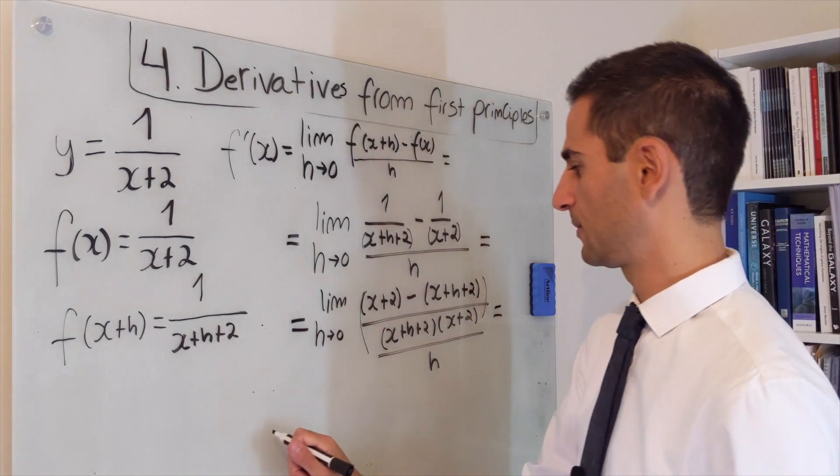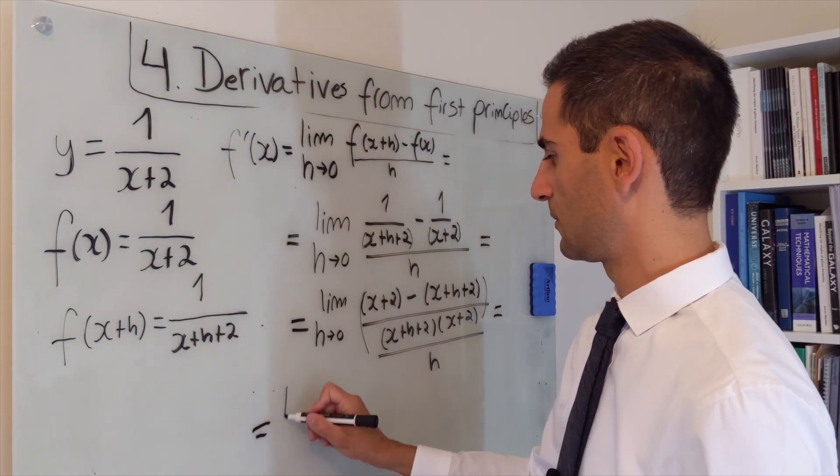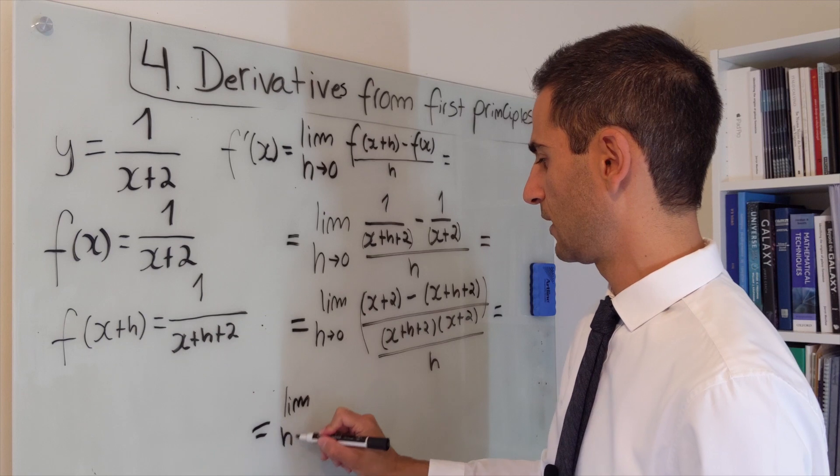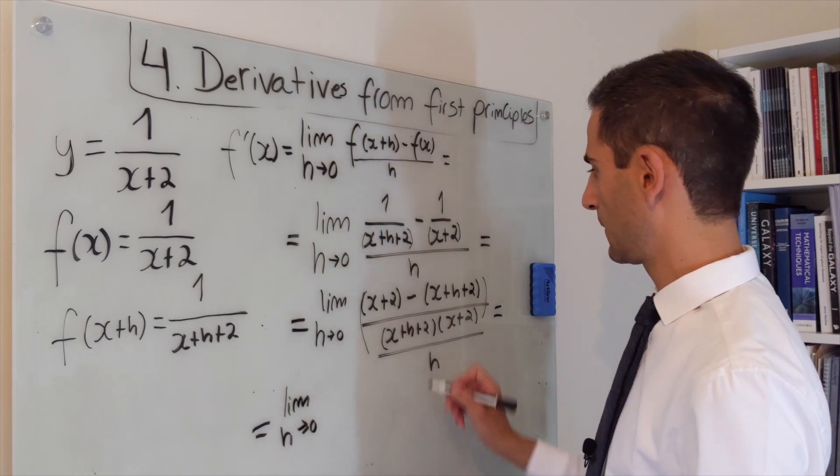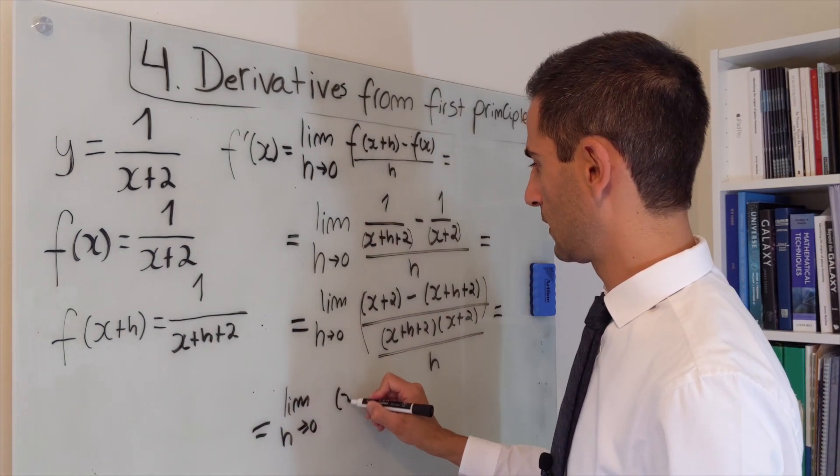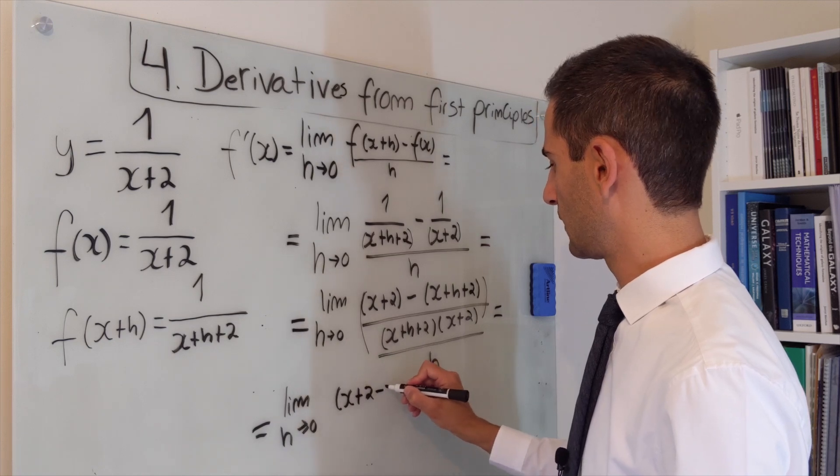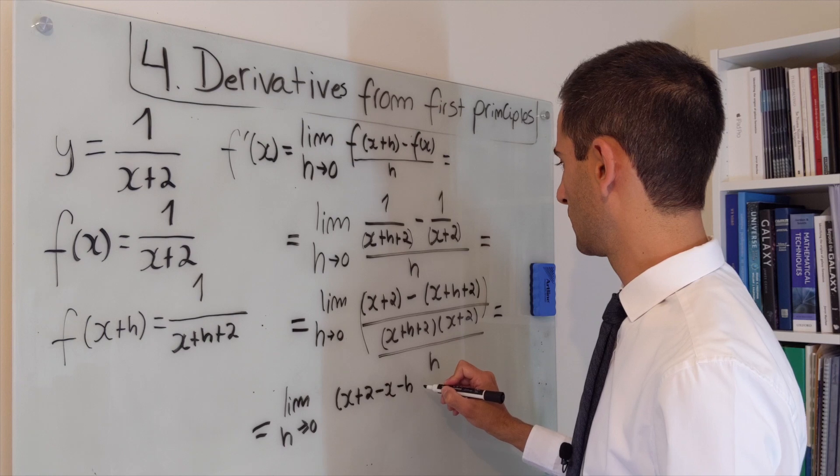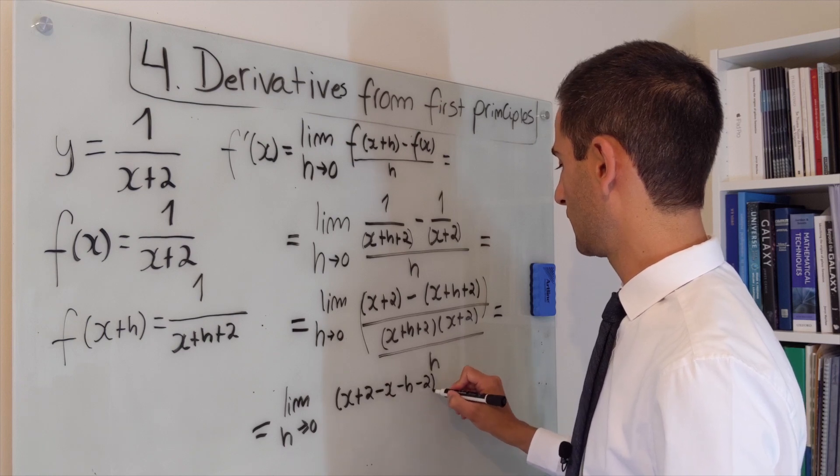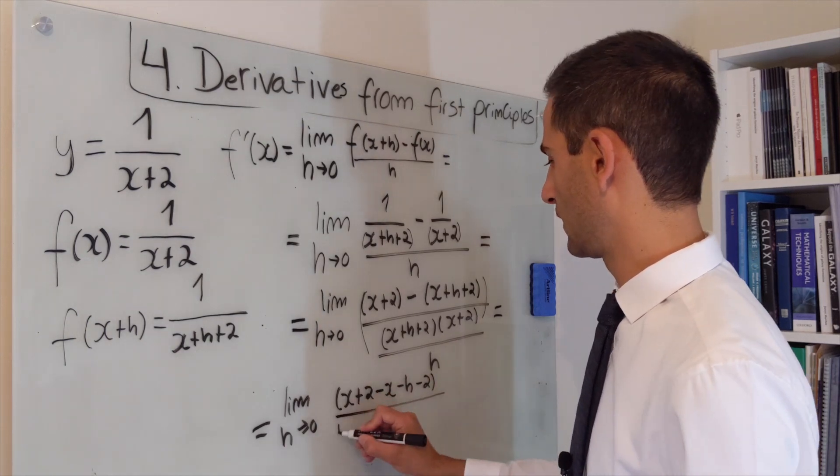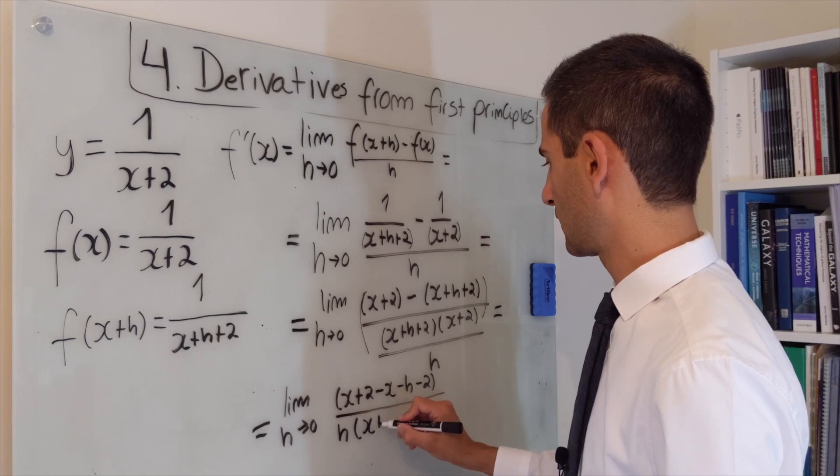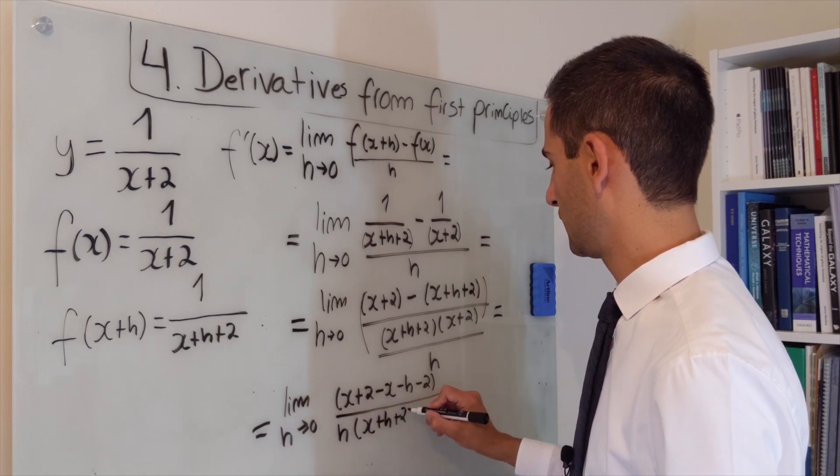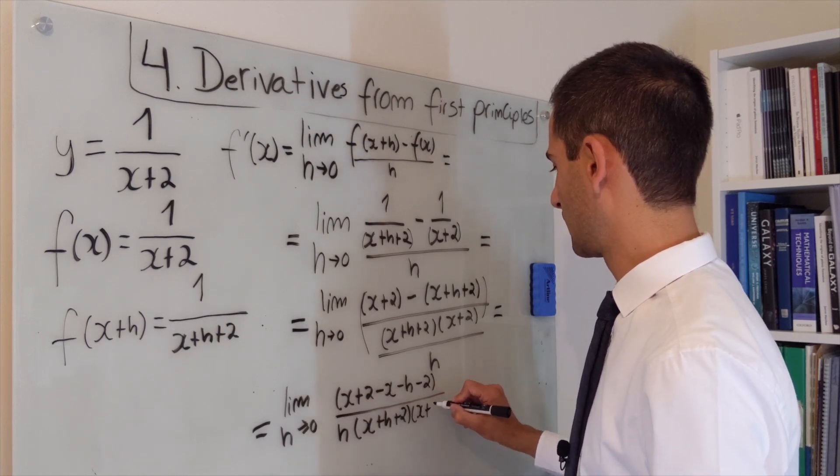So we can simply write this as the limit when h goes to 0 of x plus 2 minus x minus h minus 2 over h times x plus h plus 2 times x plus 2.